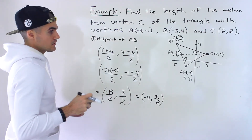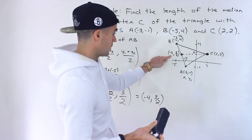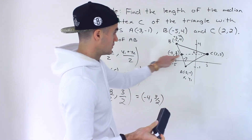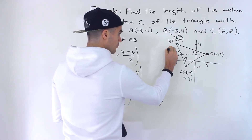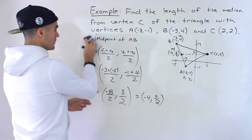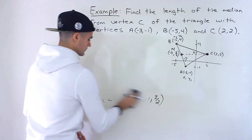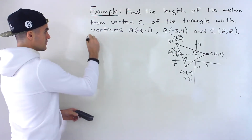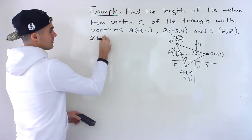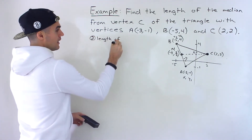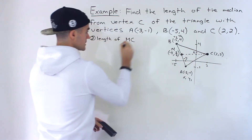So this midpoint is negative 4 and 3 over 2. From here we find the length from this point to C. Let's call this point M for the midpoint. So the second step is finding the length of line segment MC.